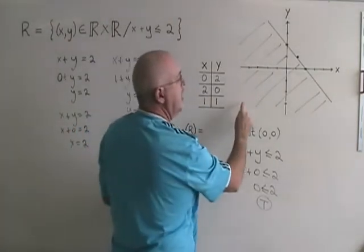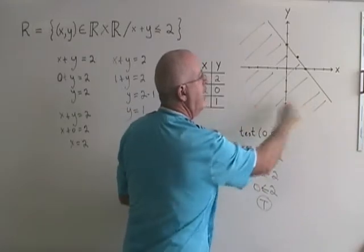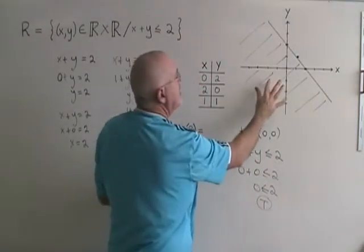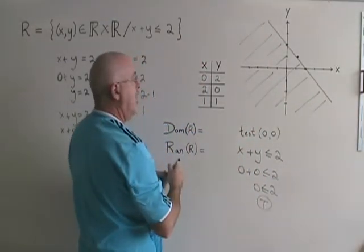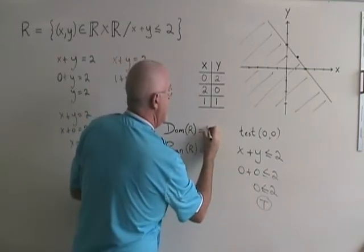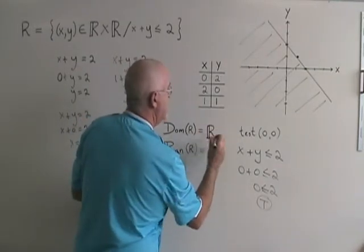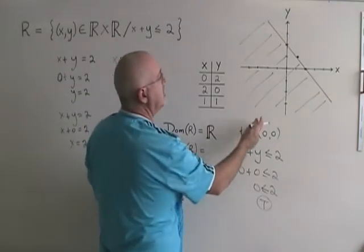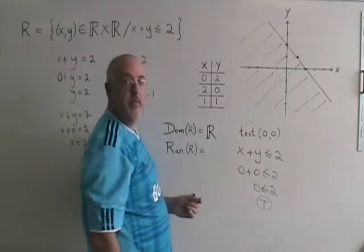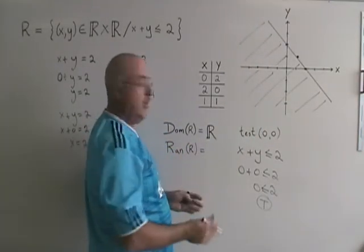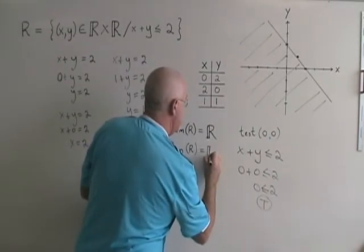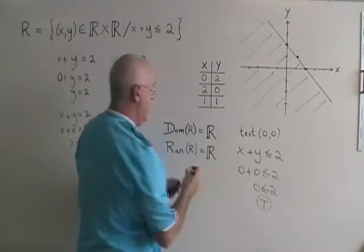Every x value is eventually being used as you move left and right across this shaded region. So all x values being used means real numbers is the domain. The same thing works for the y values. As you move up and down along the shaded region, eventually every y value will be used, so the range is all real numbers.